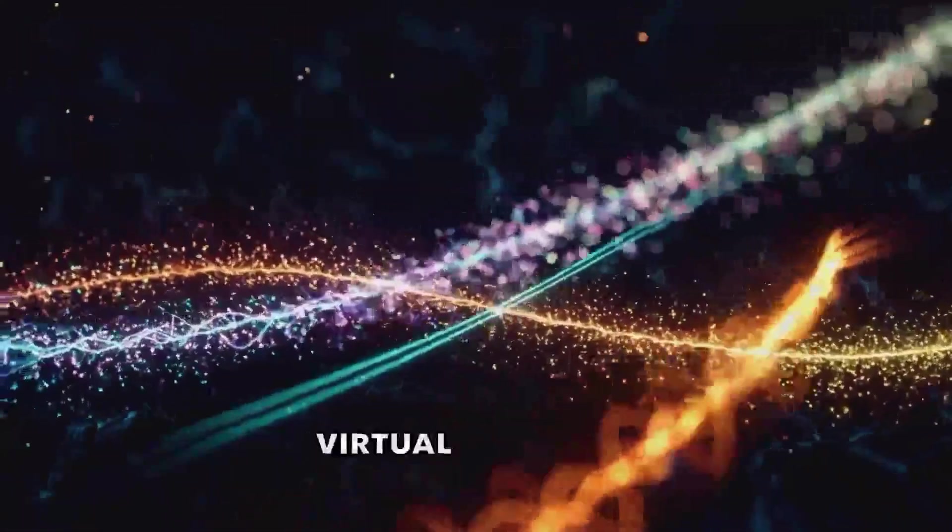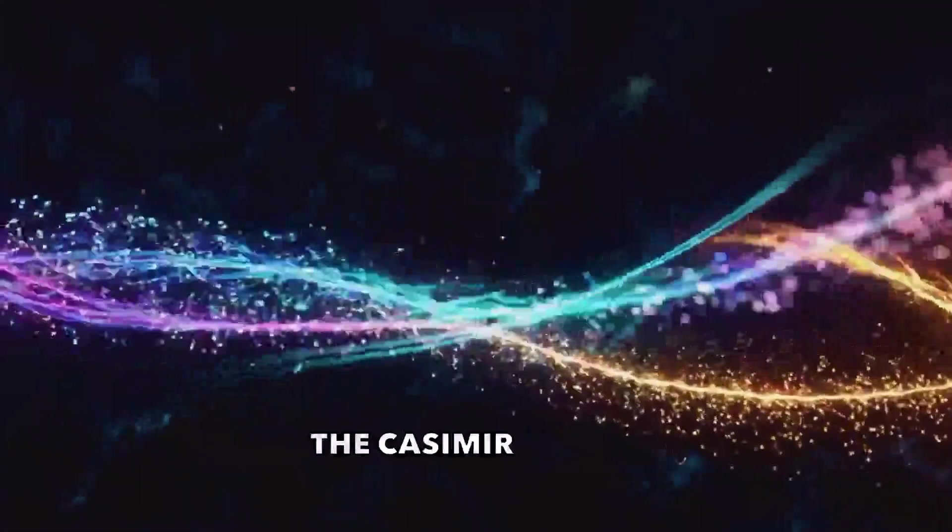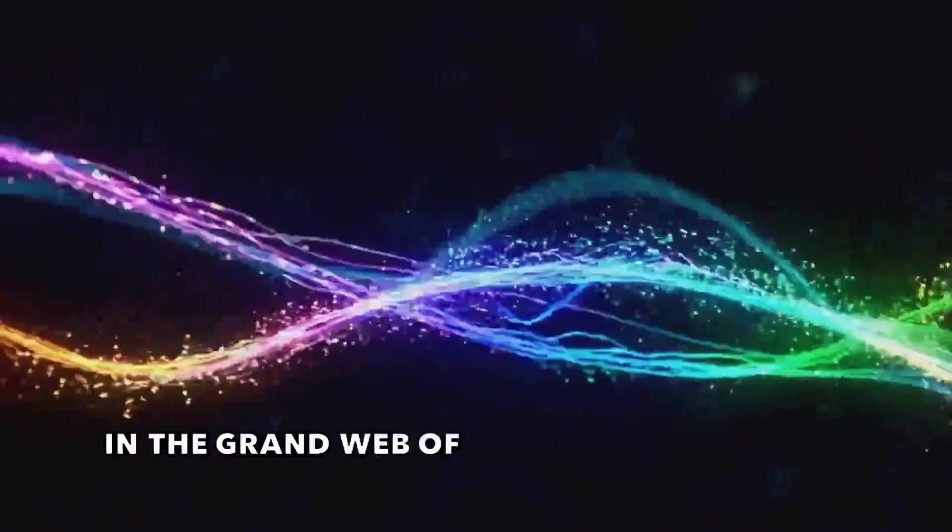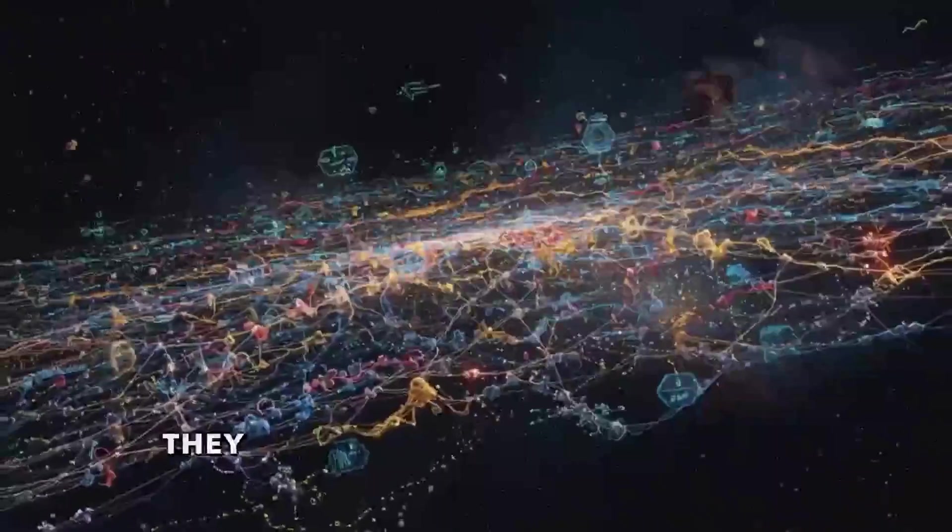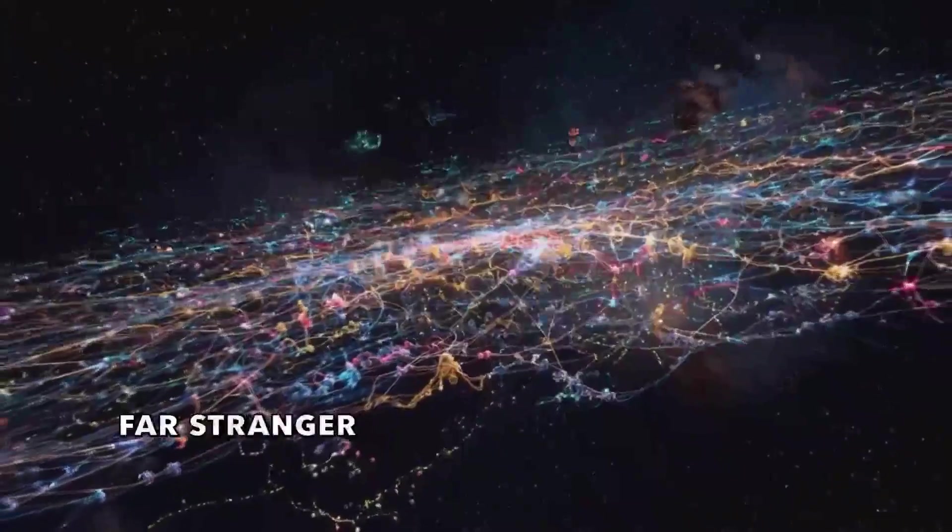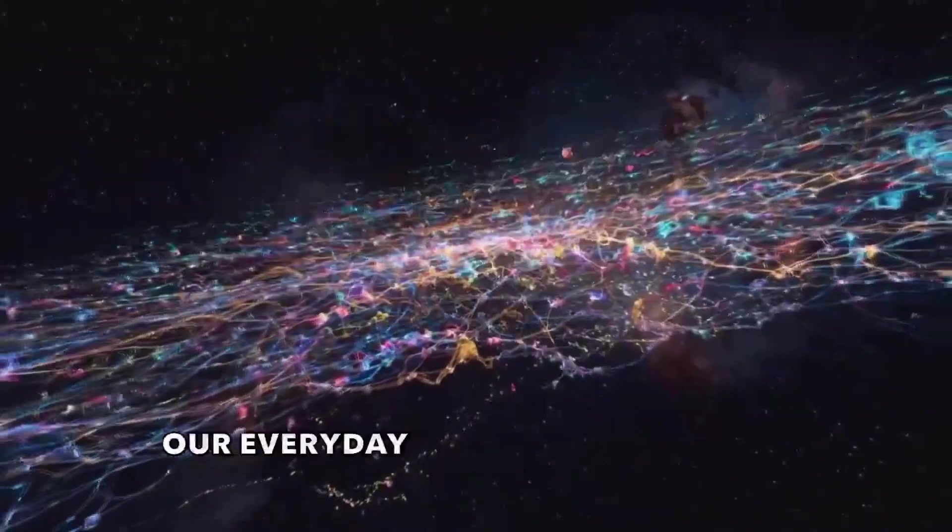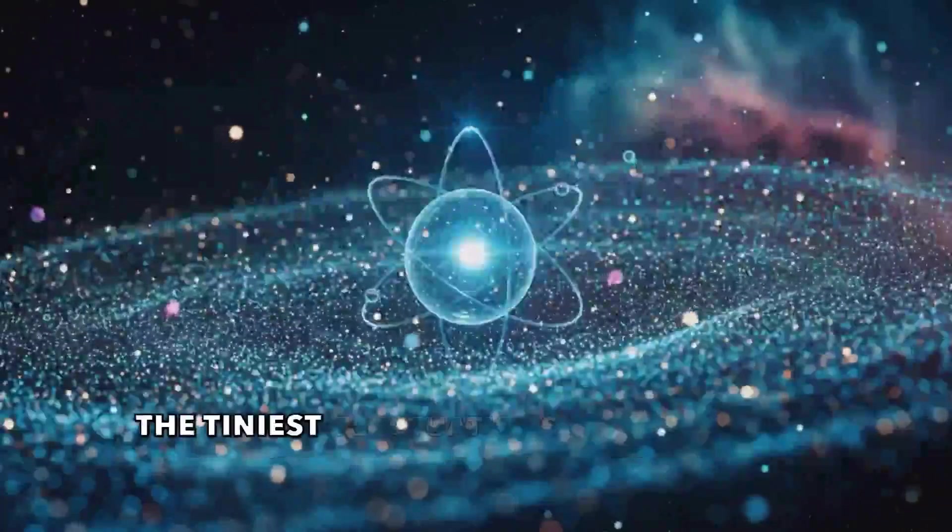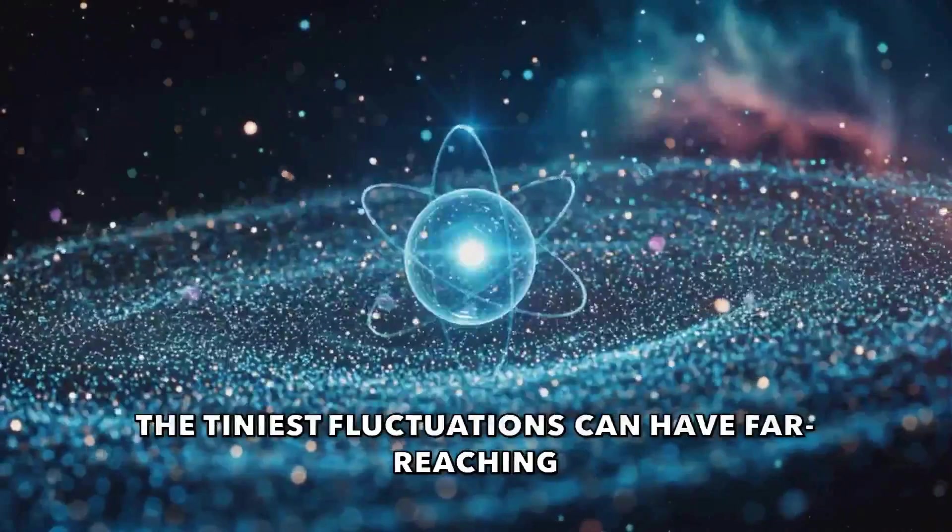As we've seen, virtual particles, the Lamb shift, the Casimir effect, and the uncertainty principle are all threads in the grand web of quantum mechanics. They remind us that the universe is far stranger and more interconnected than our everyday experiences suggest. It's a cosmic web of interactions where the tiniest fluctuations can have far-reaching consequences.